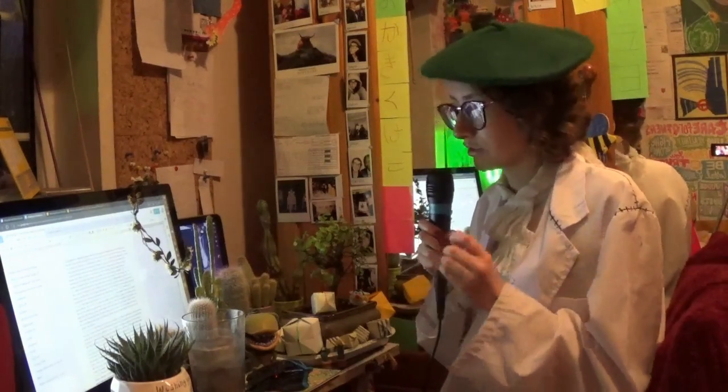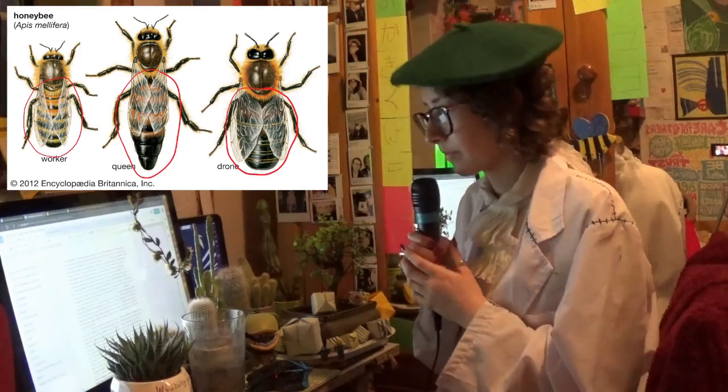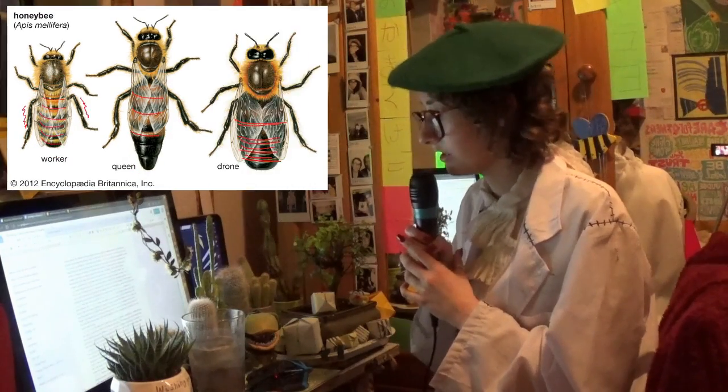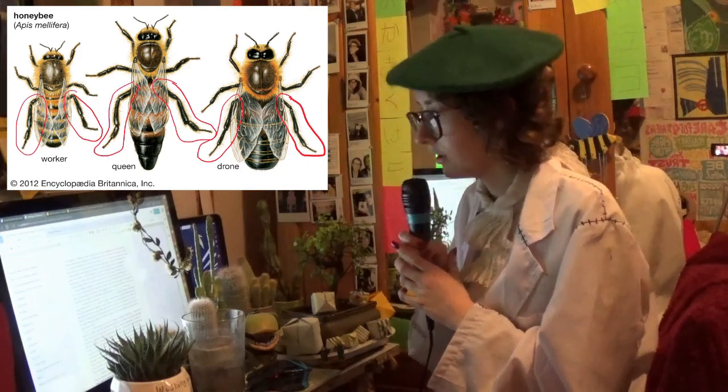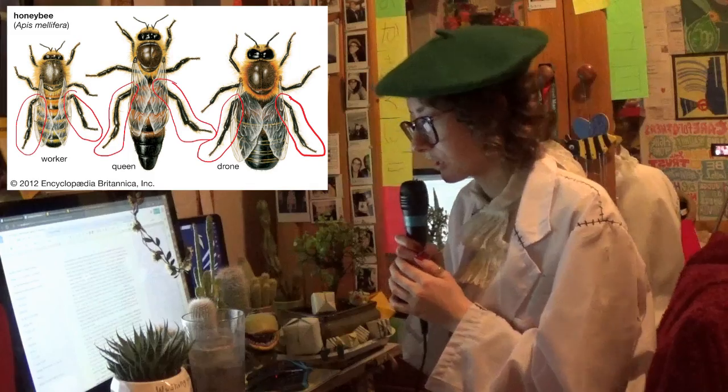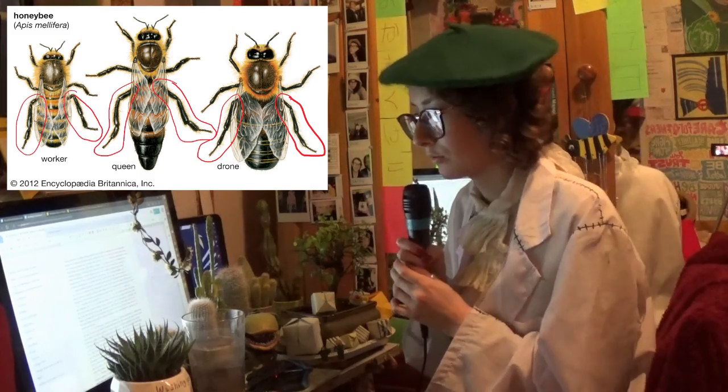The abdomen contains the stinger, hind legs and is covered in yellow and black hair as a predator deterrent and pollen grain attractor. The hind legs contain the pollen baskets, which is a place where bees store most of the pollen when collecting it.